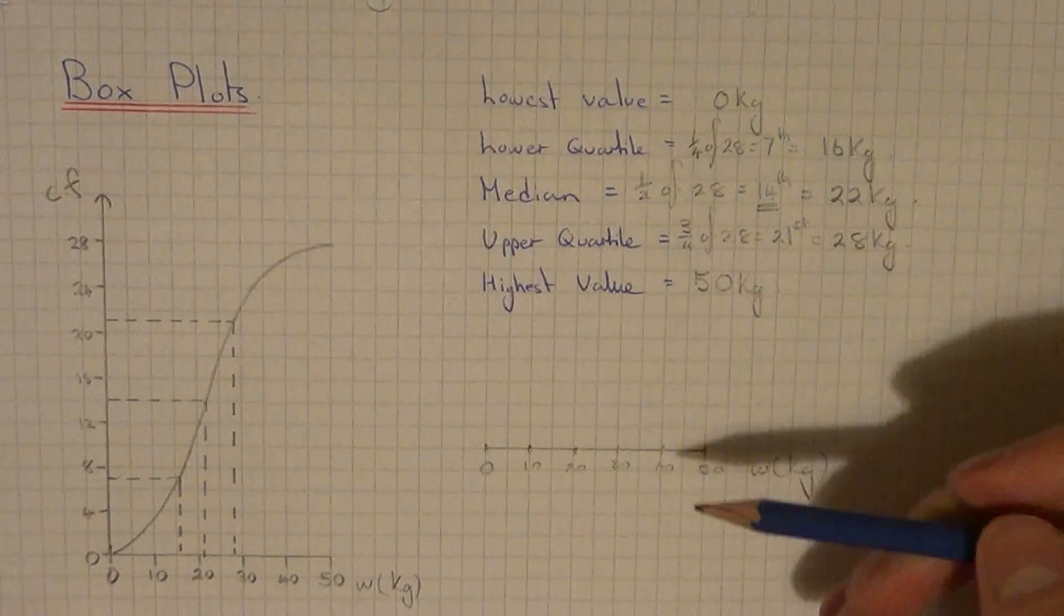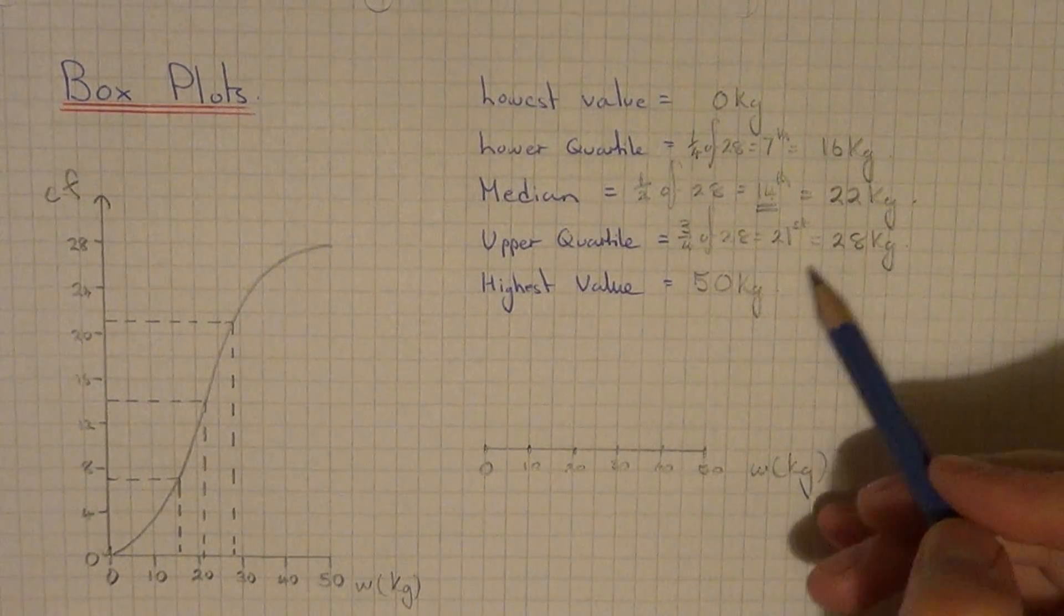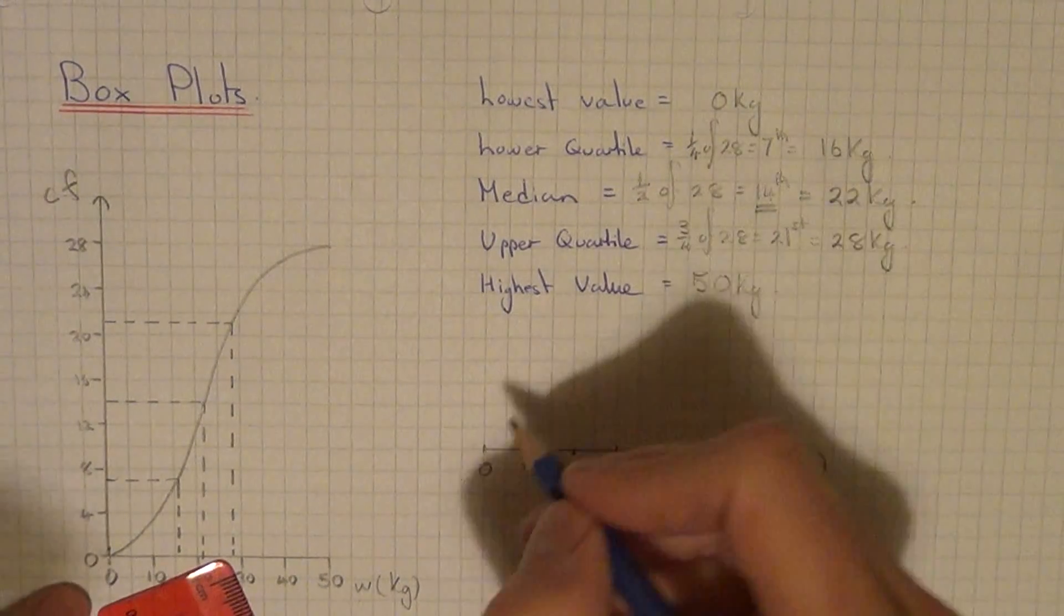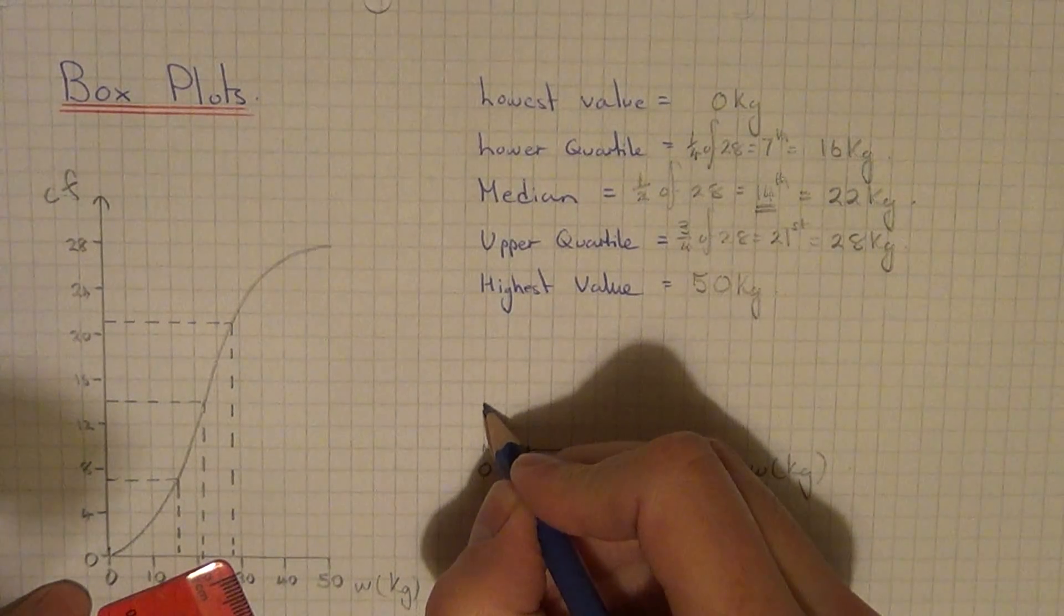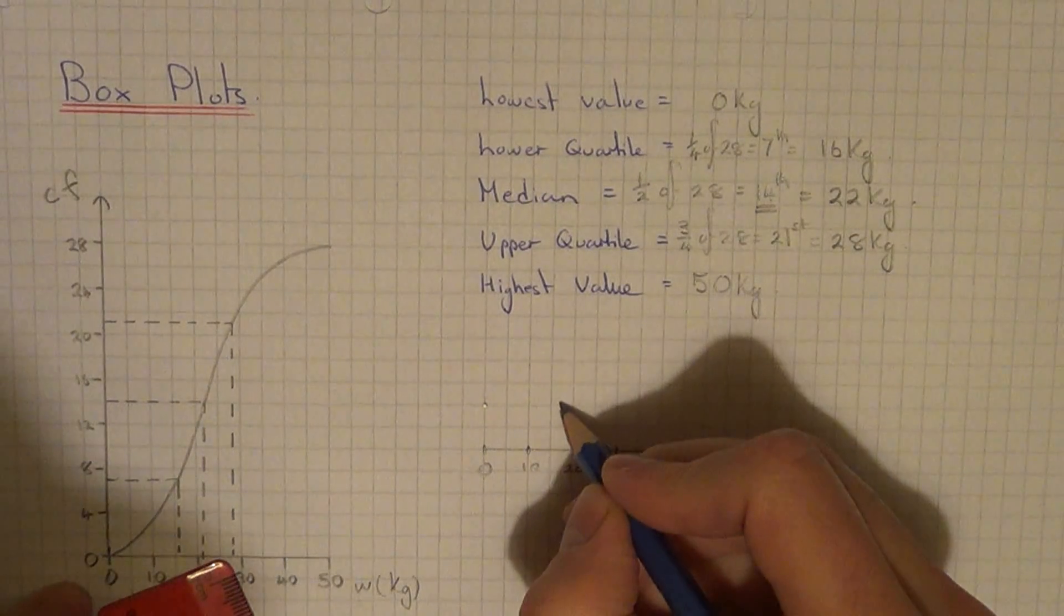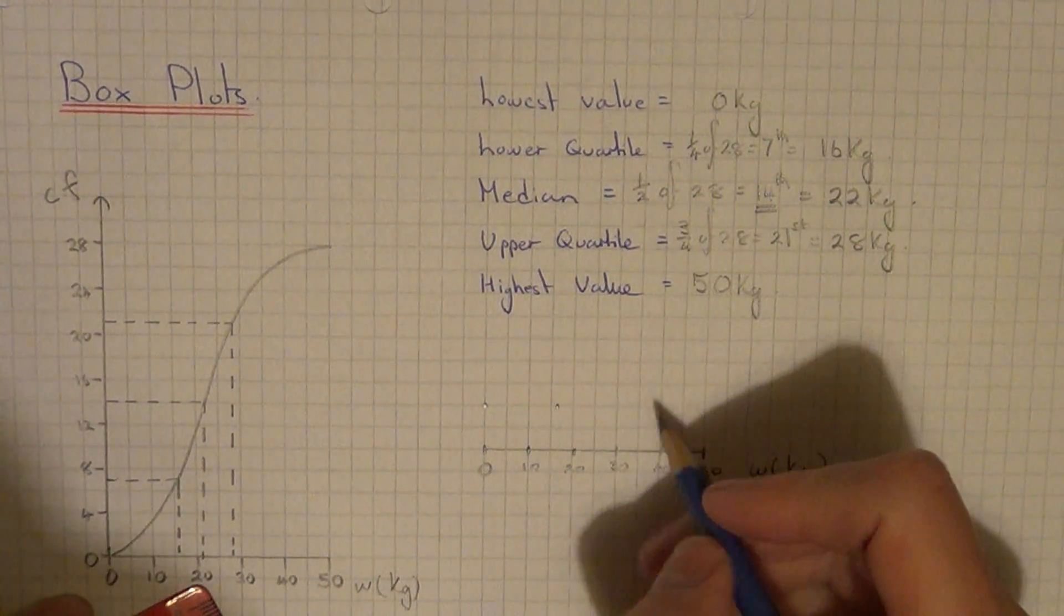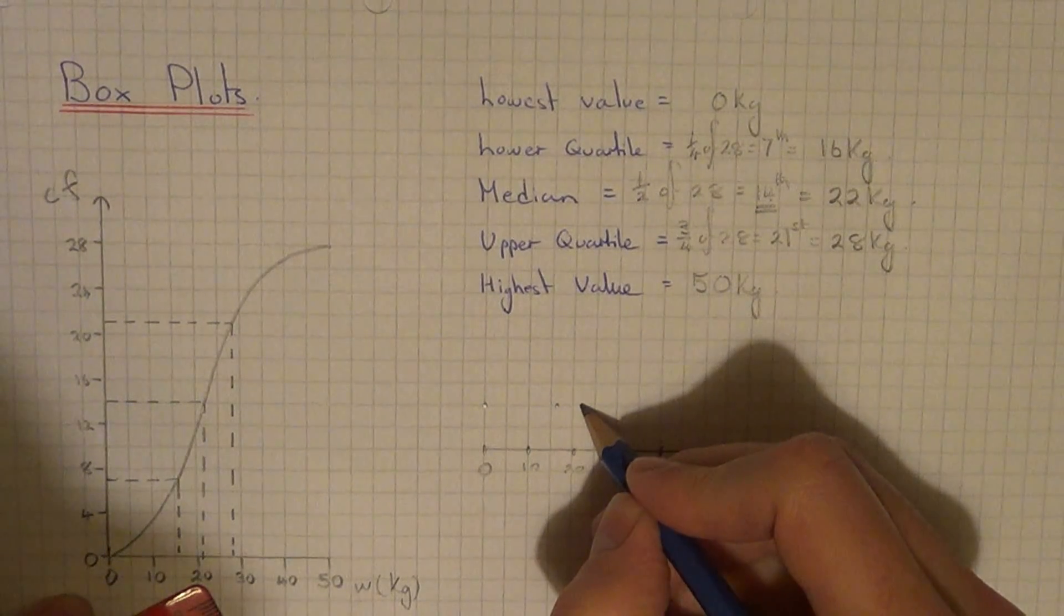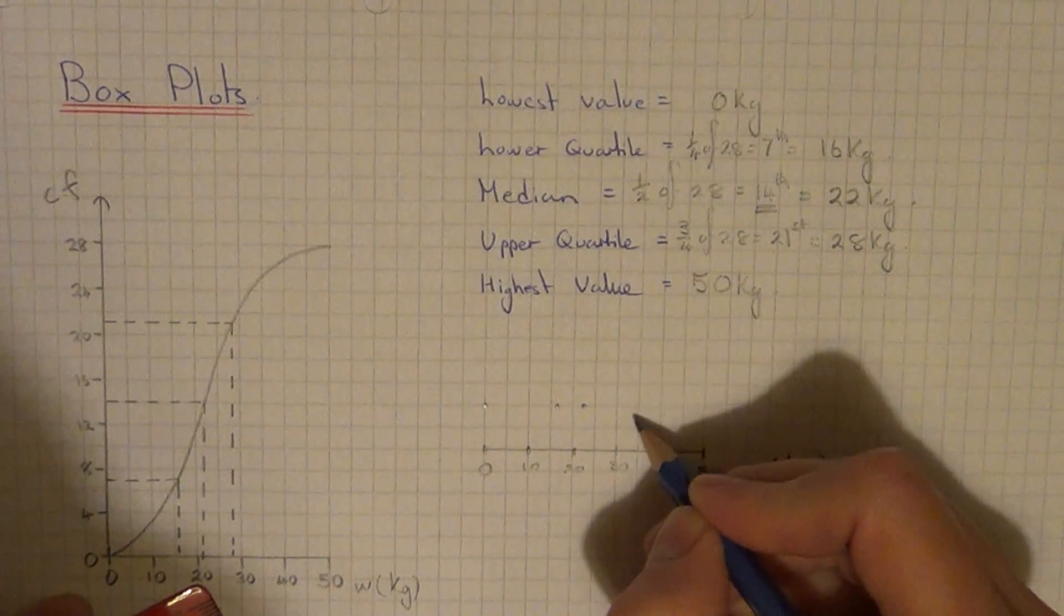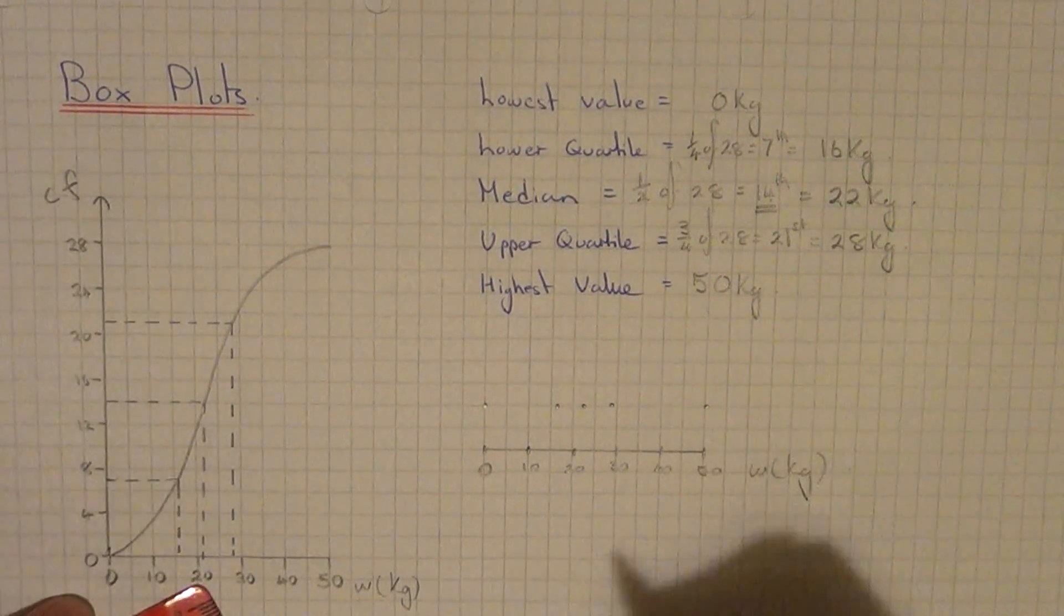And I'm going to go two squares above this line now and mark on these five numbers. So our lowest value is 0 kg. Our lower quartile is 16 kg. Our median is 22 kg. Our upper quartile was 28. And our highest value was 50.